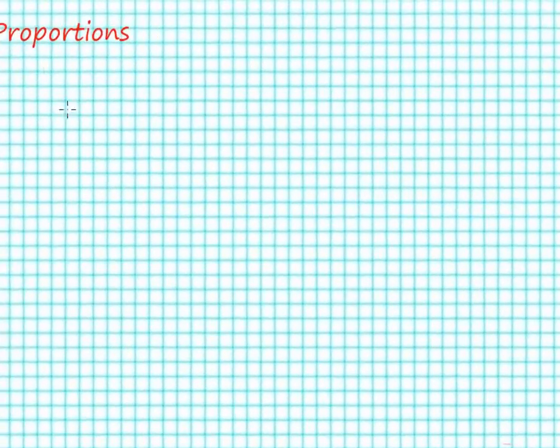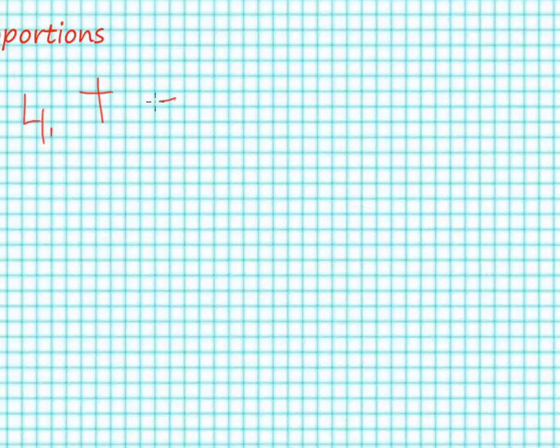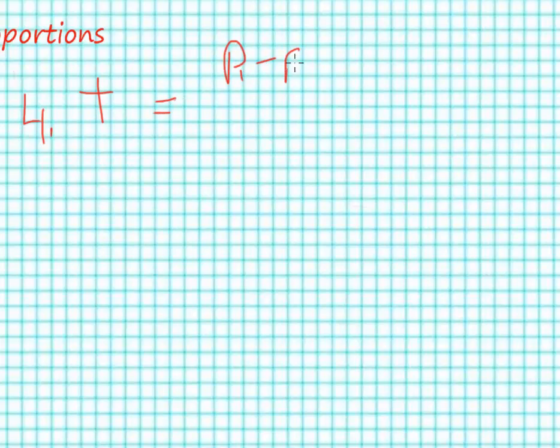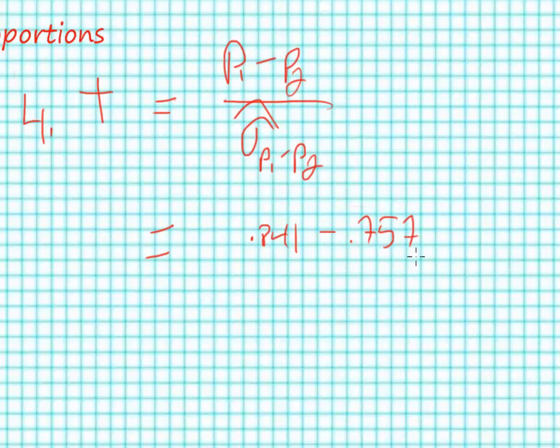Just to review the formula, we know that t is equal to the difference of our two proportions divided by the standard error, which we calculated in steps one, two, and three. We have approximately 84% of the college graduates indicating that it's very important to them to have a job that's fulfilling, minus the approximately 75% of the high school graduates who have that same belief, and we divide that by our standard error that we calculated in step three. We end up with a t-statistic of 2.54.